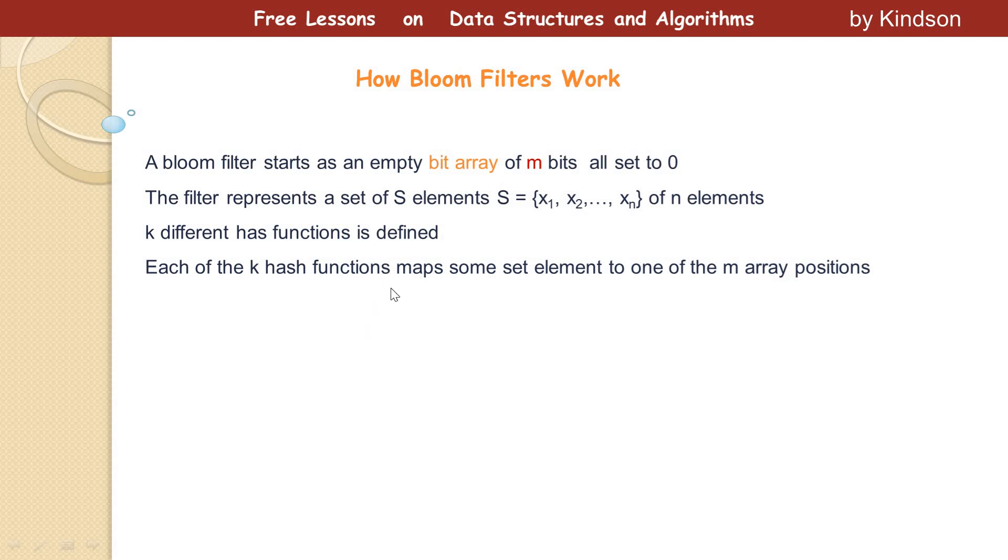Alright, so let's see. How does a Bloom Filter work? First, a Bloom Filter is an empty bit array. It starts with an empty bit array all set to zero. So this is a starting point of the Bloom Filter as an empty bit array. So this is the initial part of the Bloom Filter, an empty bit array all set to zero.